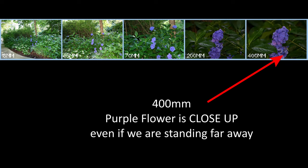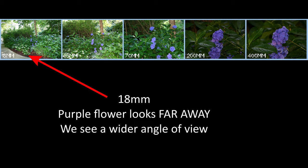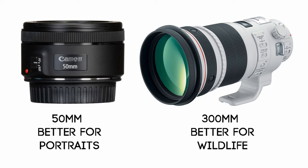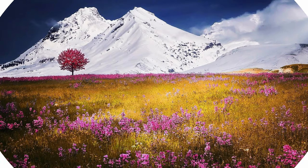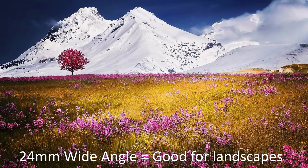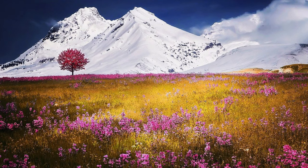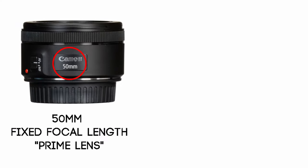In other words, a 400mm lens will bring a smaller area of the scene closer to you than an 18mm lens. Different focal lengths are better for different types of photography, so understanding the difference between a 50mm and a 300mm is important. You will want to choose lenses that are the appropriate focal length for what you're photographing. Some lenses will have just one number, such as 50mm — this is a fixed focal length, called a prime lens.